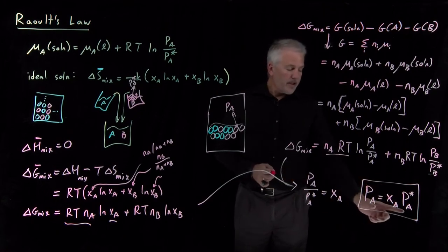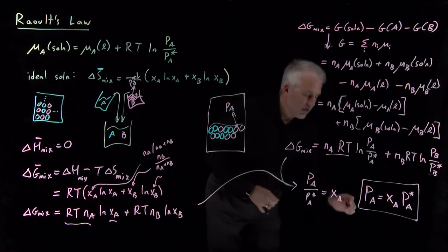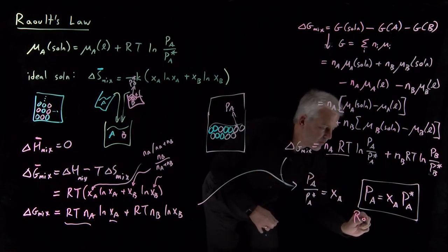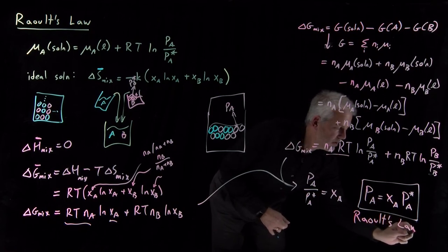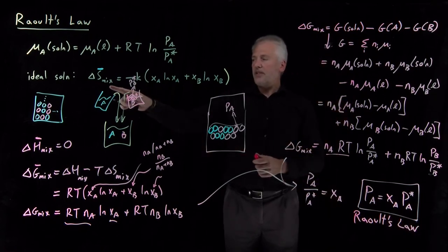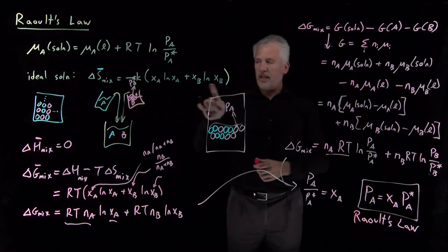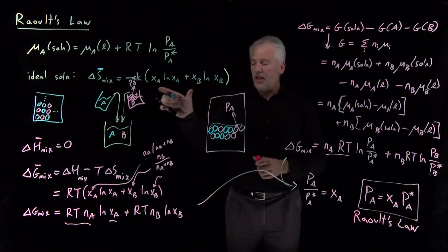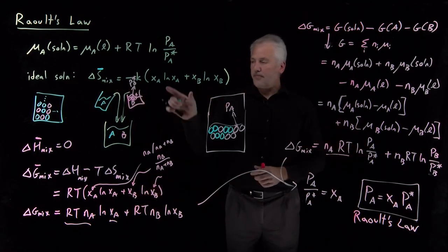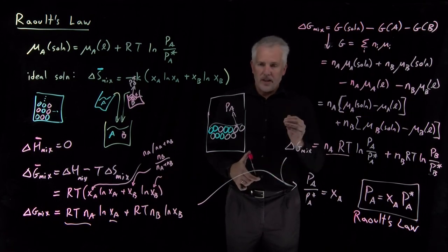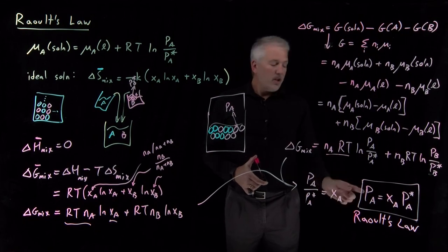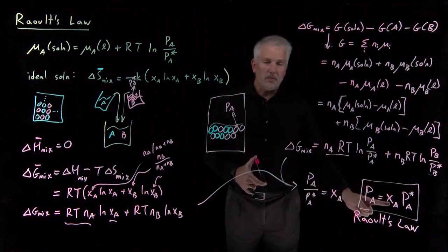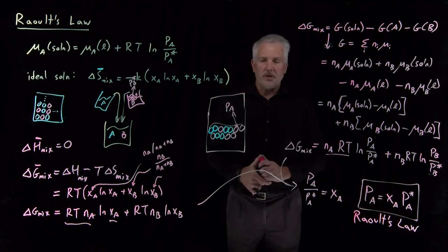This result is called Raoult's Law, and we've derived it specifically for the case of an ideal solution — one where the entropy of mixing takes the standard form. For an ideal solution, equivalently a solution that obeys Raoult's Law, we can predict the partial pressure above a solution if we know only the mole fraction and the vapor pressure of the pure substance.